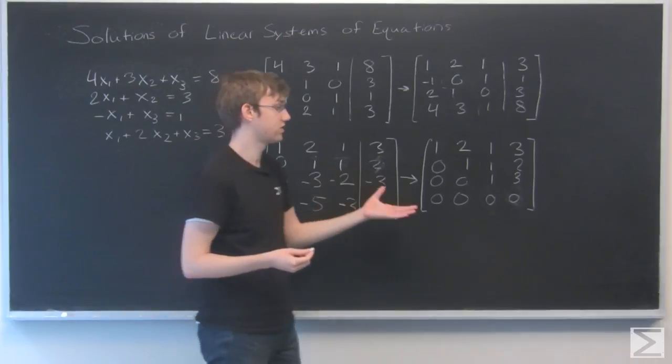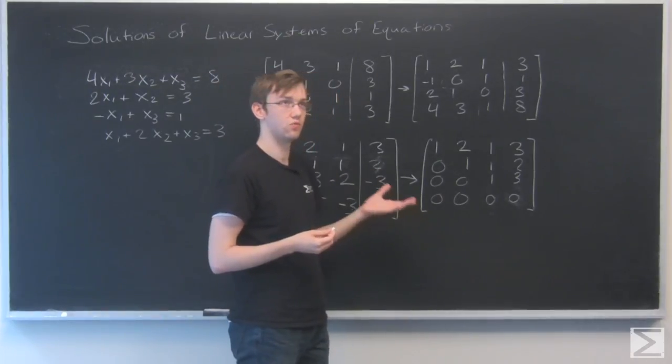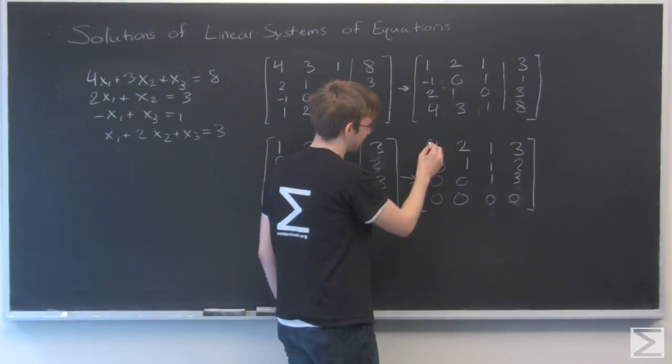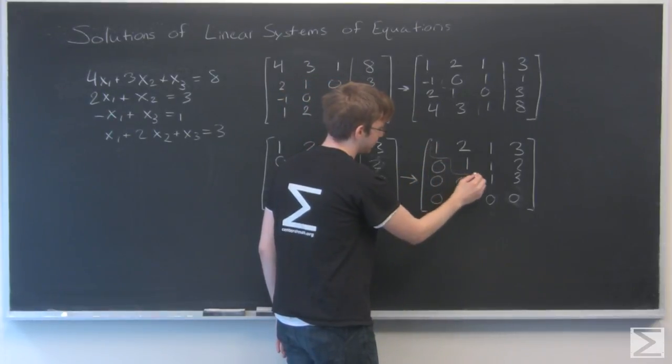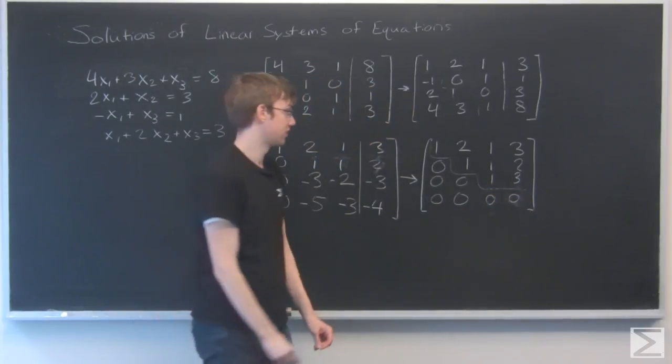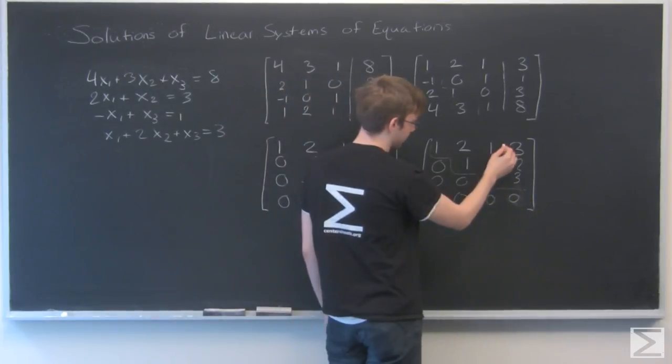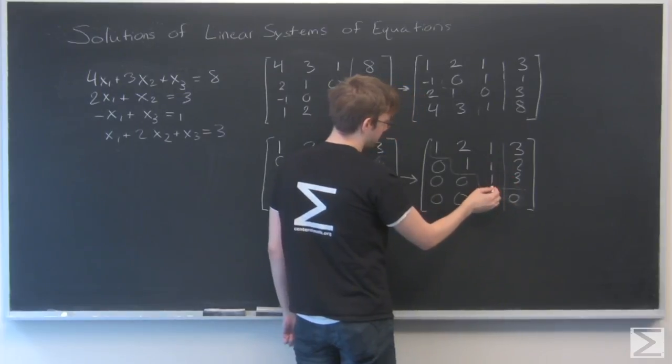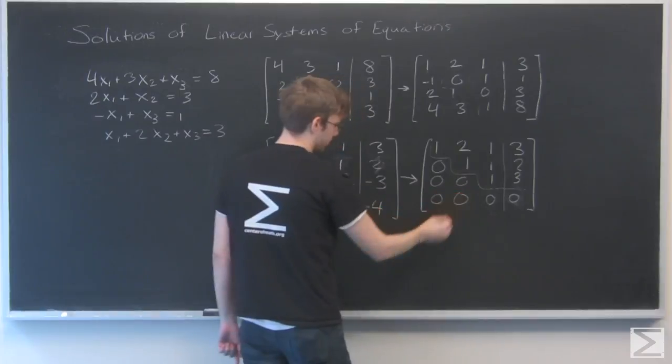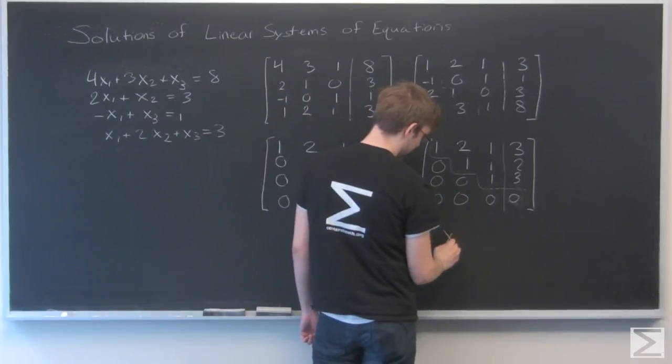So what this is actually formally called is row echelon form. And as you can see, like I was trying to do at the top, I have kind of a staircase pattern of ones going down. And that means this last row right here corresponds to x3 equals 3, because these two are zeros. So I'm going to write x3 equals 3.